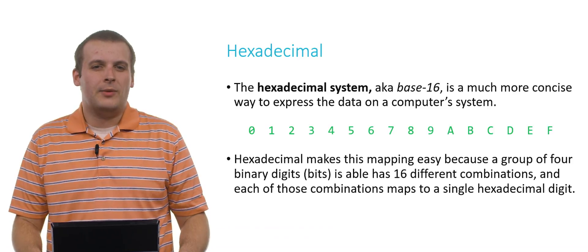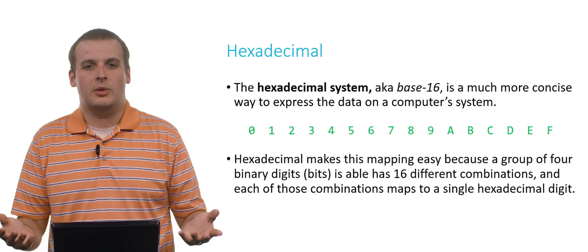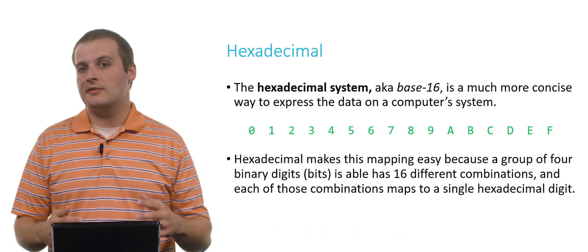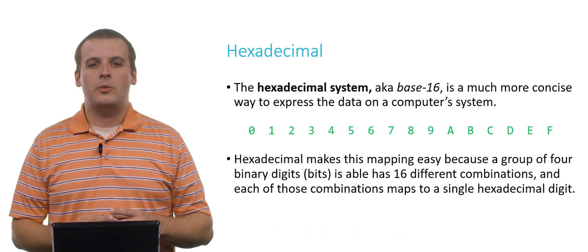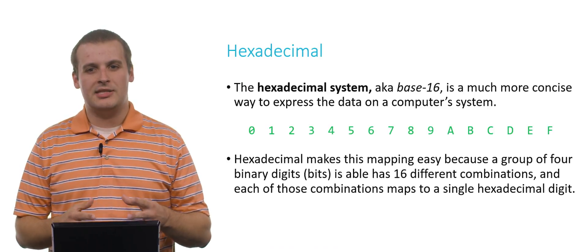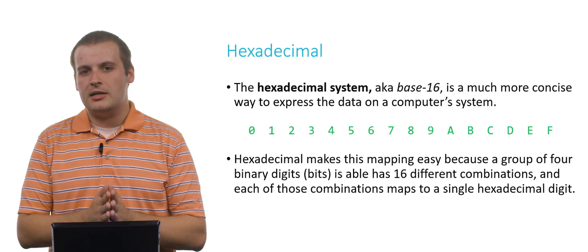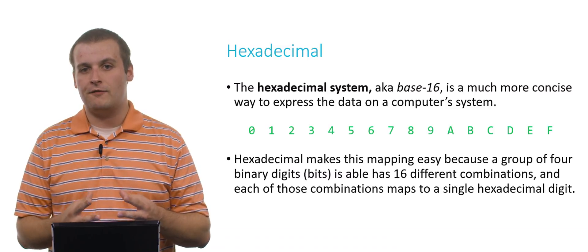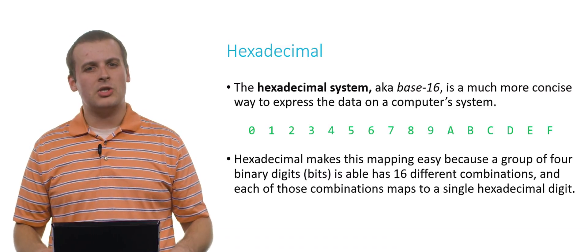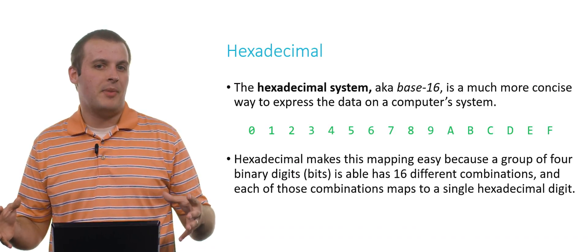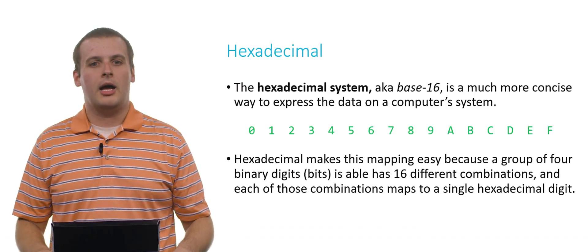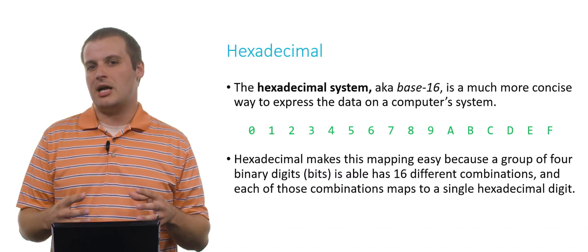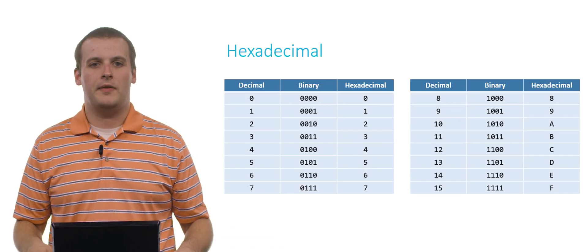So why is hexadecimal cool? Why do we need this other additional base — we already have 2 and 10, why do we need 16? Well, 16 is a power of 2. And so each hexadecimal digit, 0 through F, corresponds to a unique arrangement of four binary digits — four bits. And so in that sense, we can express very long, complex binary numbers in hexadecimal in a much more concise way without losing information or having to do particularly cumbersome conversions on those numbers.